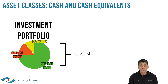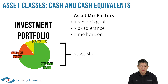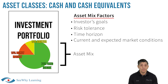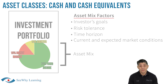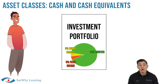There's a lot to consider when determining the appropriate asset mix, including the investor's goals, risk tolerance, time horizon — which is how long until the investor is going to need the money — current and expected market conditions, and the list goes on. For example, it may be appropriate for a young, aggressive investor saving for retirement in 40 years to have an aggressive asset mix with most of the portfolio invested in equities.